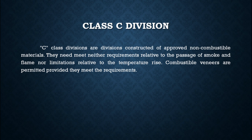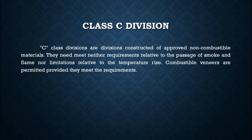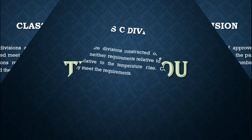Class C divisions are constructed of approved non-combustible material. They need not meet any requirements related to the passage of smoke and flame, nor limitations relative to temperature rise. Combustible veneers are permitted provided they meet the applicable requirements.